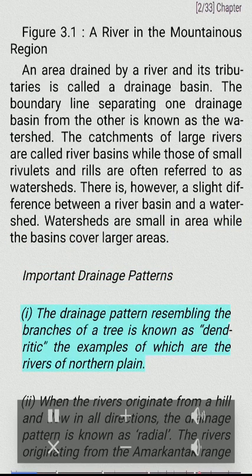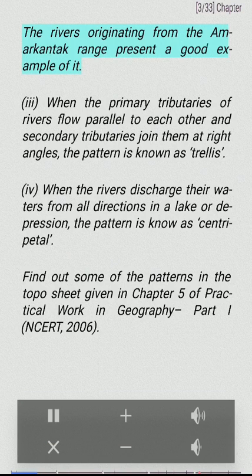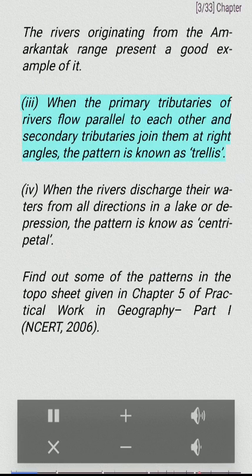Important drainage patterns: (i) The drainage pattern resembling the branches of a tree is known as dendritic — the rivers of the northern plain are examples. (ii) When rivers originate from a hill and flow in all directions, the pattern is known as radial — the rivers originating from the Amarkantak range present a good example. (iii) When primary tributaries flow parallel to each other and secondary tributaries join them at right angles, the pattern is known as trellis.